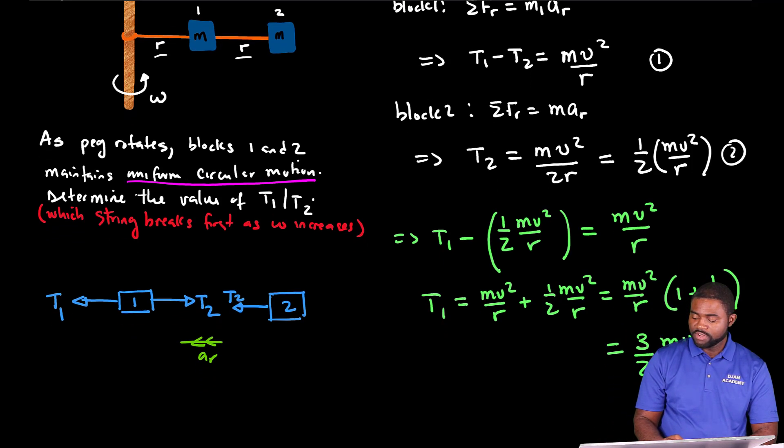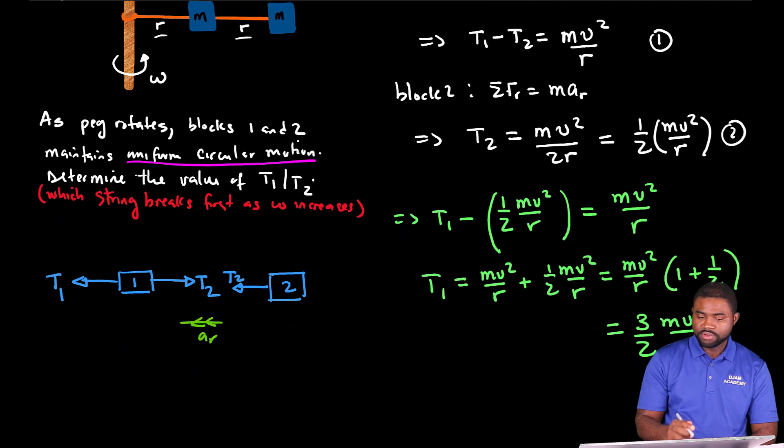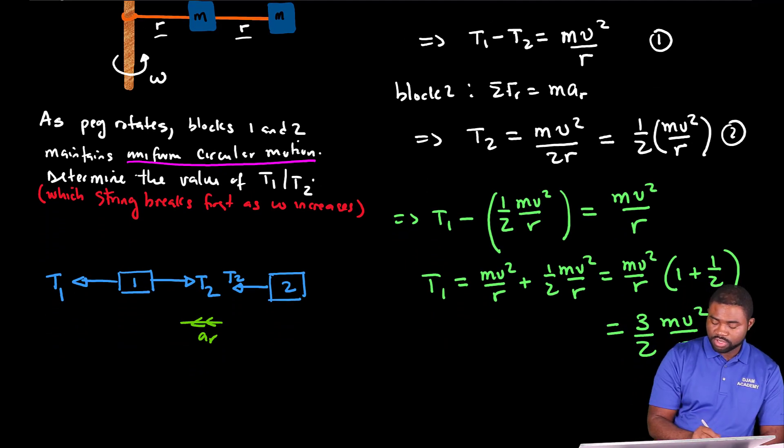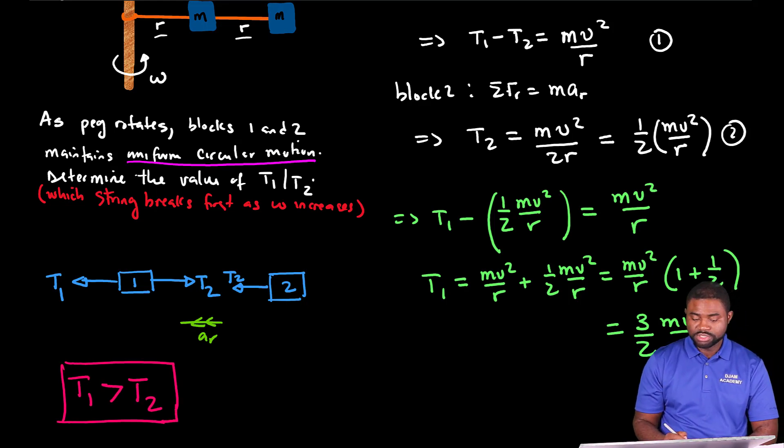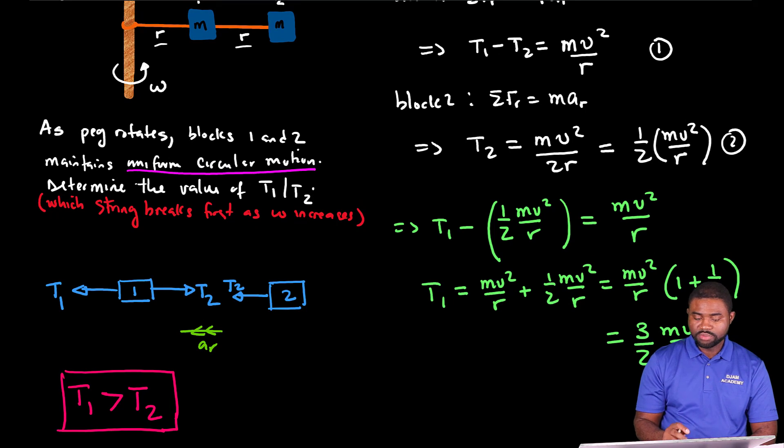T1 is far more greater than T2. What does that imply? It implies that as omega increases, the string that will most likely break first will be string one.